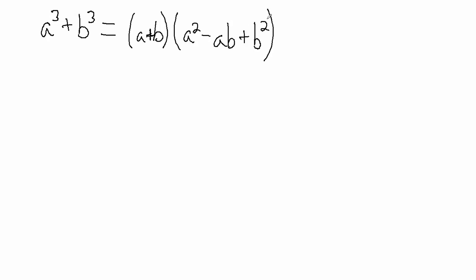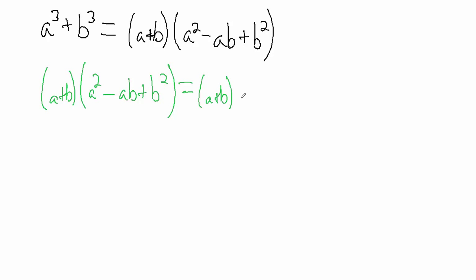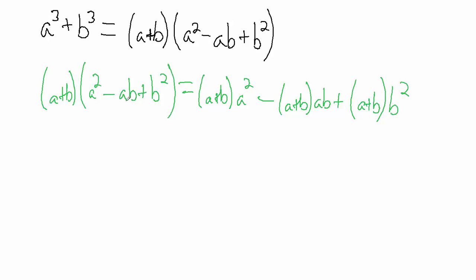If we take (a + b) and distribute it into (a² − ab + b²), let's write this out separately. The quantity (a + b) times the quantity (a² − ab + b²): distributing (a + b) in, we get (a + b) multiplied by a², then minus (a + b) times ab, then plus (a + b) times b². So we're taking (a + b) and distributing it — multiplying by each of these three terms.